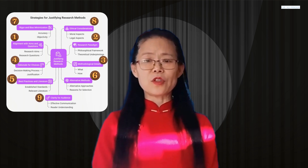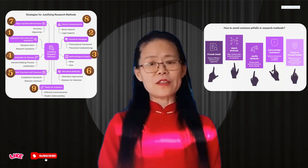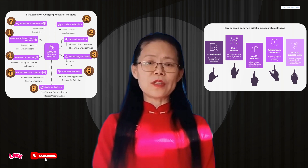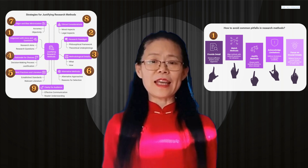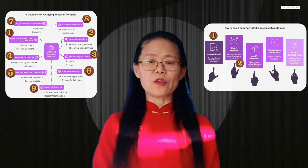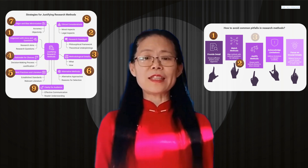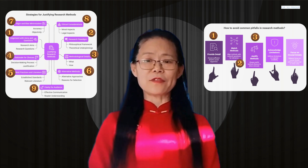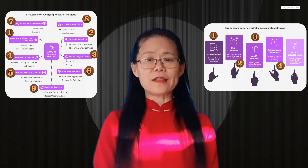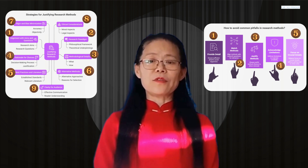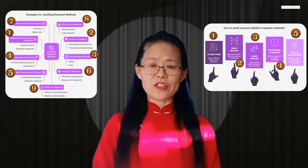Just a few quick traps to keep in mind — 5 common pitfalls to avoid: 1. Avoid being vague — provide sufficient detail. 2. Don't mismatch methods with questions. 3. Don't just list methods — always justify. 4. Don't ignore limitations. 5. And finally, don't focus too much on minor details, but don't skip crucial ones.